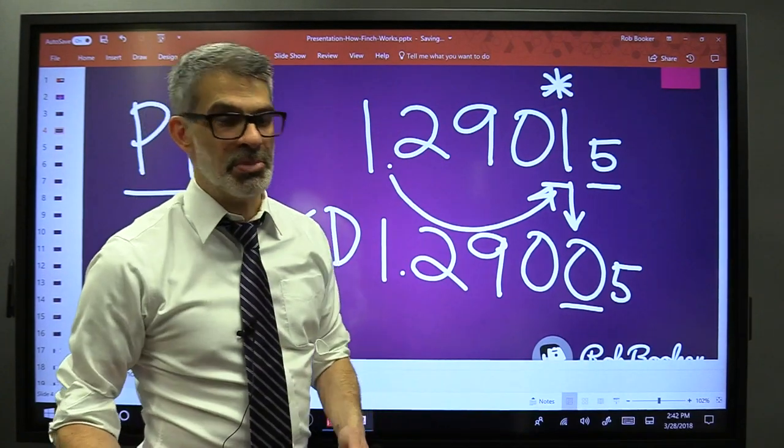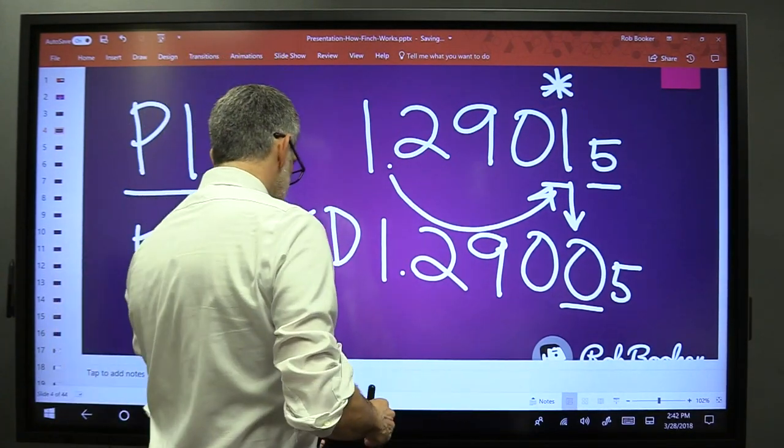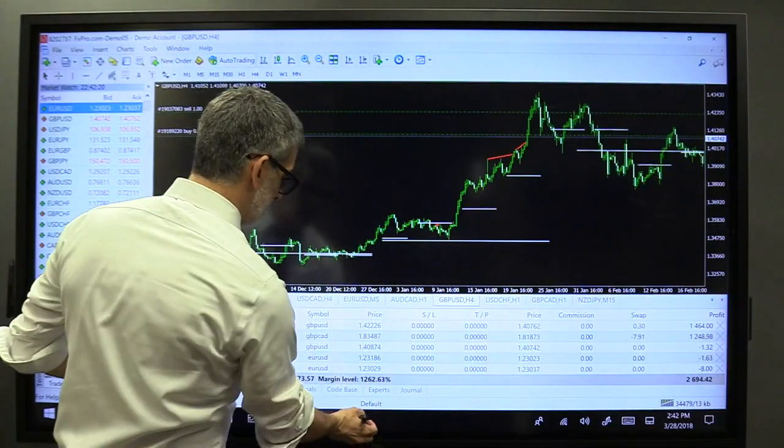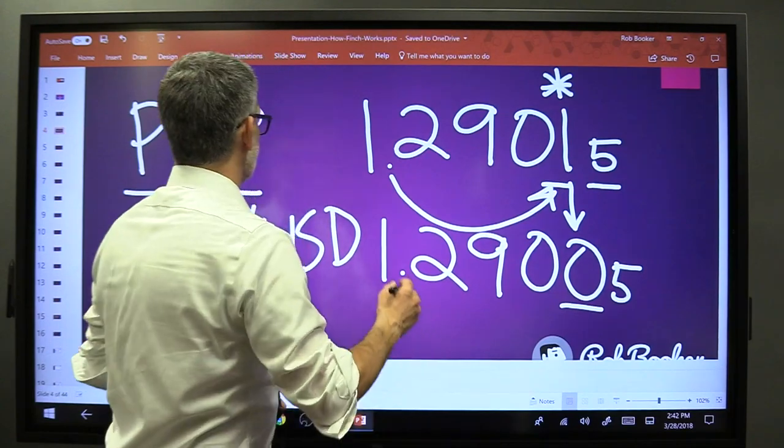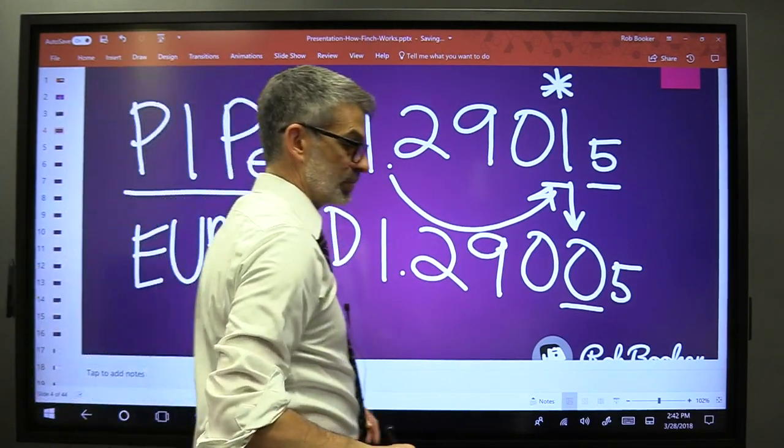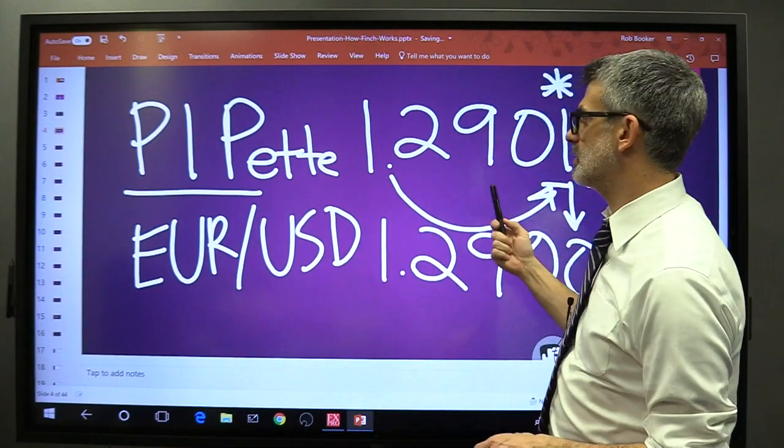Now there's this other number in most trading platforms. You're going to see a fifth number at the very edge of all these quotes in your platform. A lot of people are referring to this as a pipette. It's a smaller pip, a fraction of that.